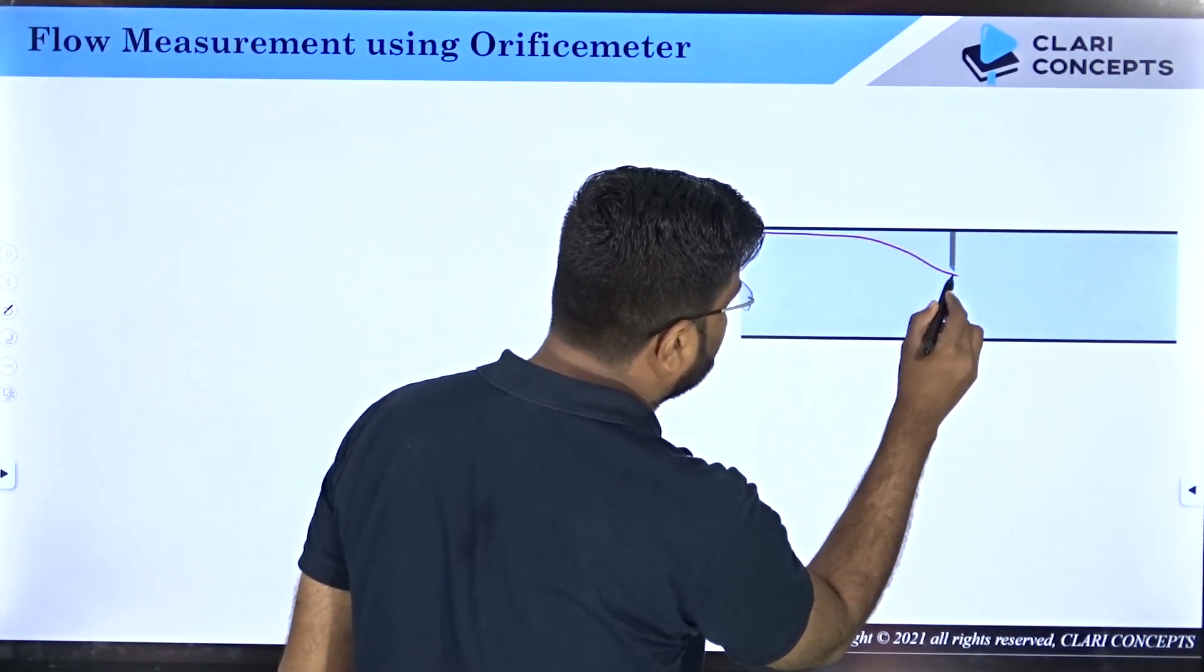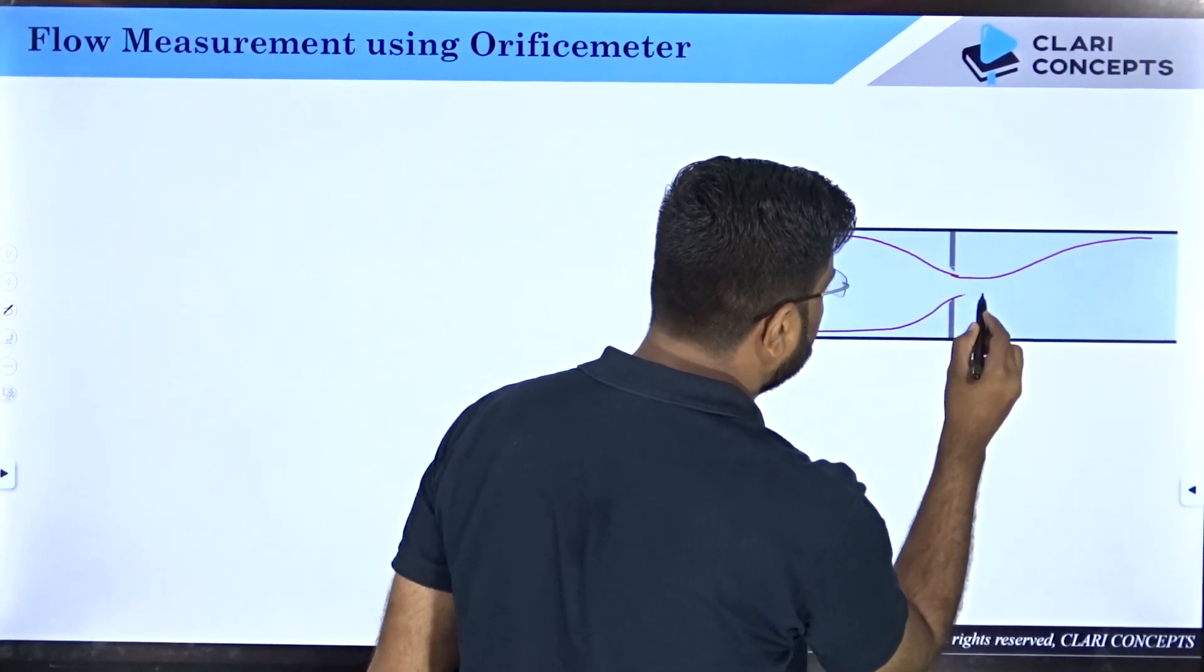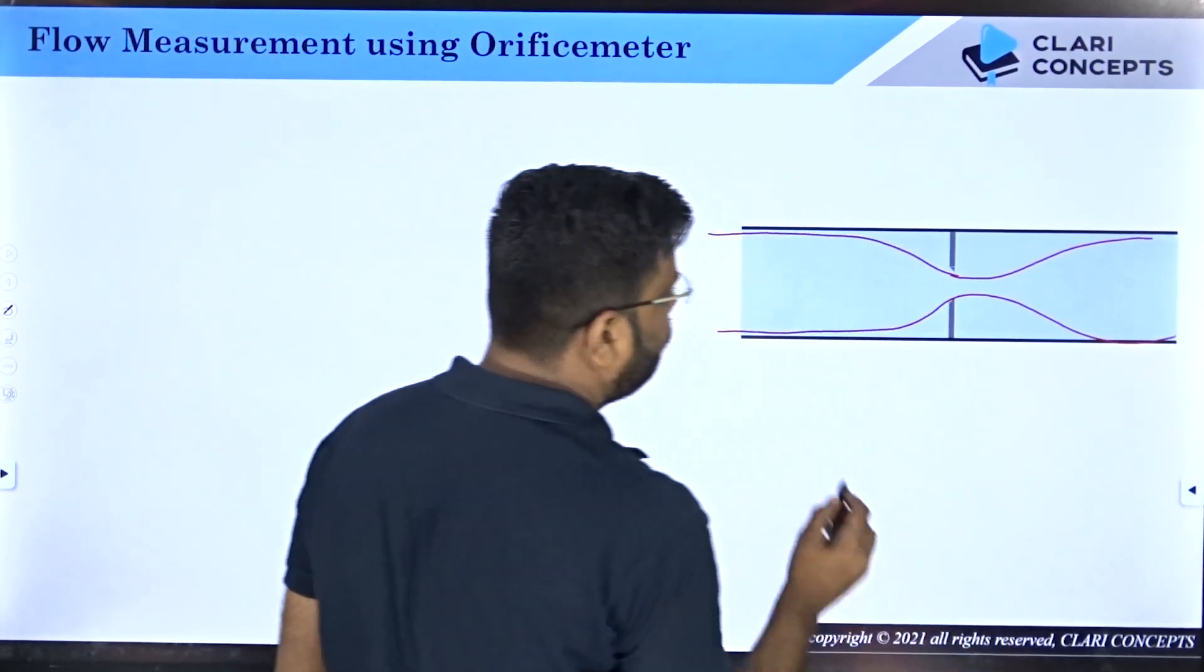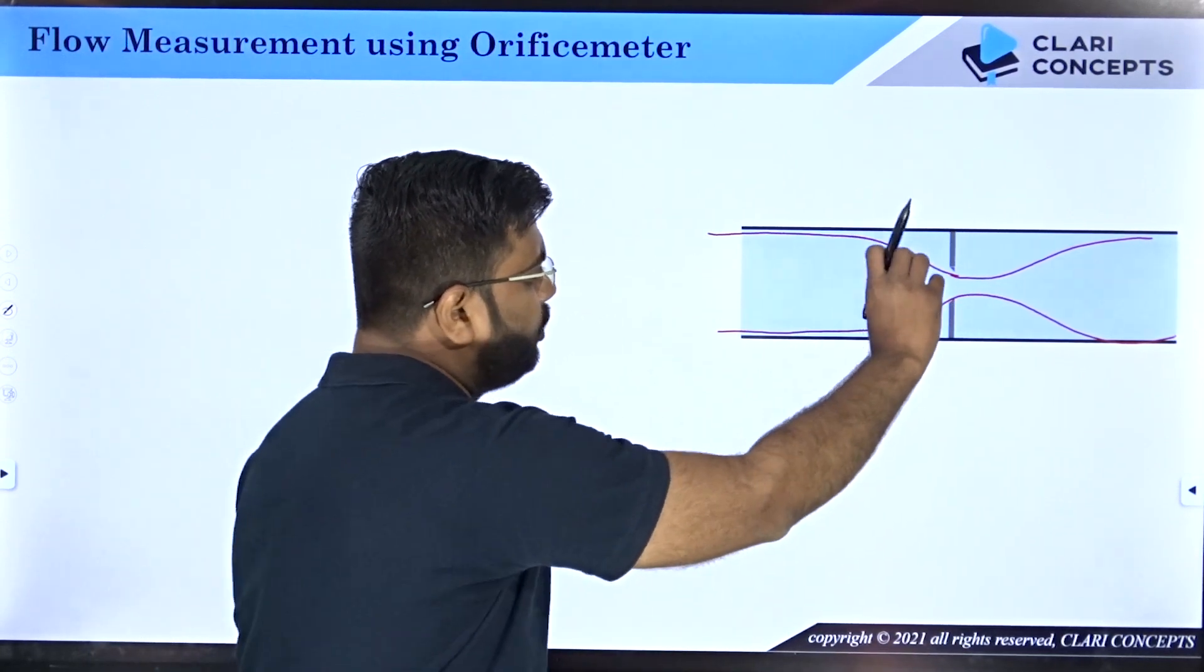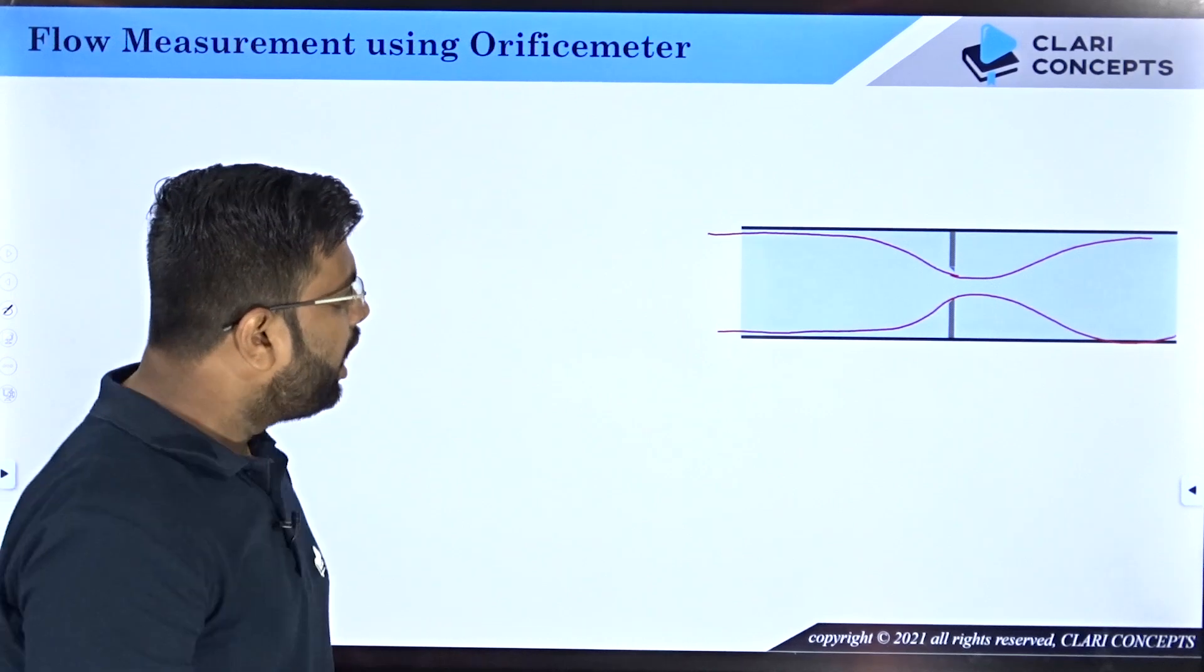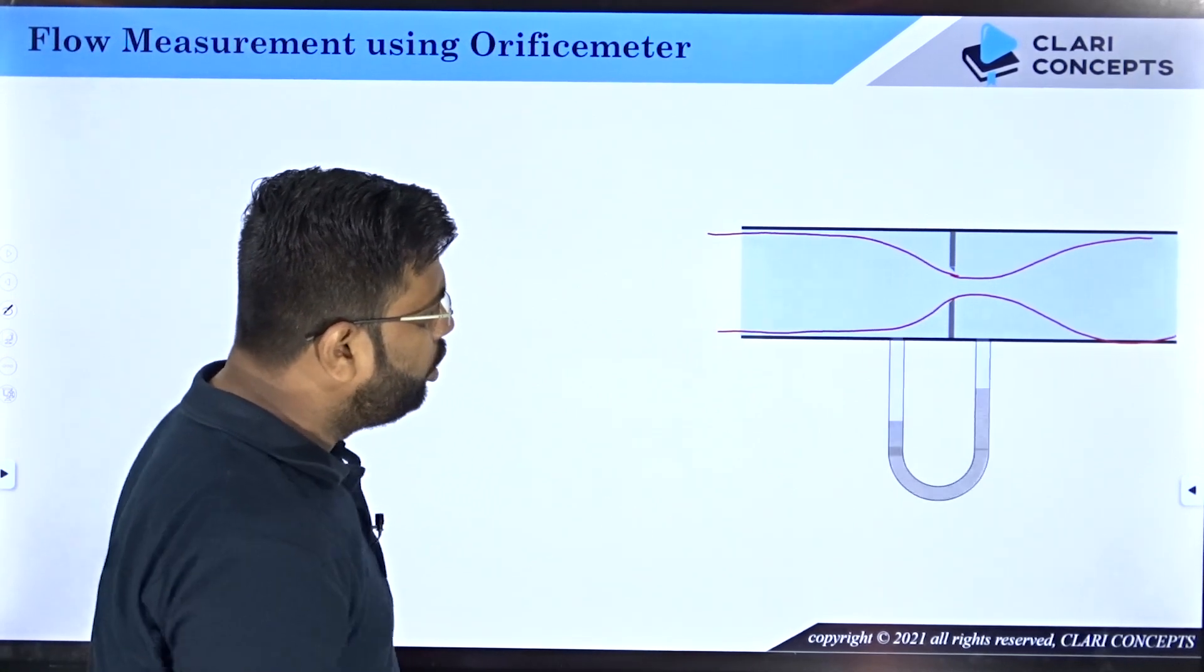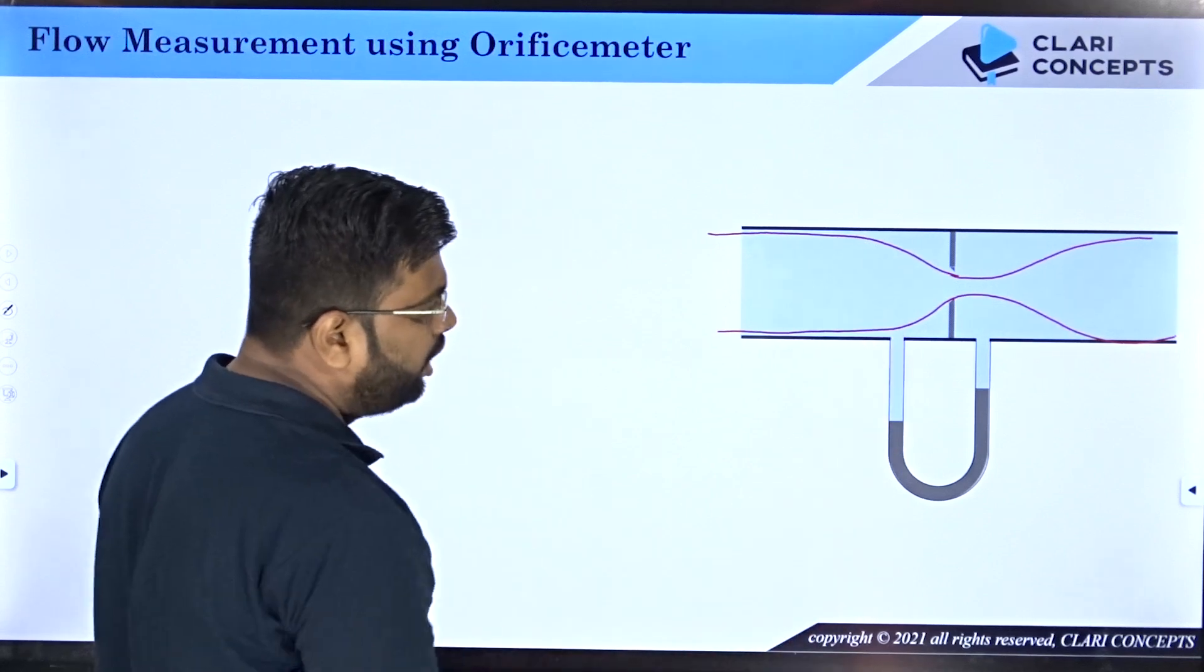All the other streamlines will be in between these two. Since you have reduced the area, the velocity will have been increased, the pressure would have been decreased. When you want to measure that difference, you deploy the U-tube manometer for that and you have the manometric fluid in between.